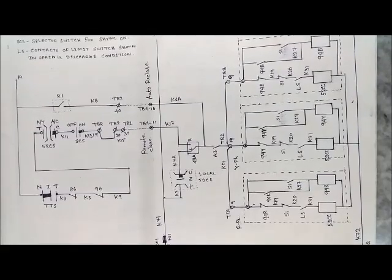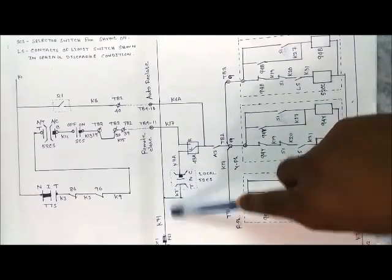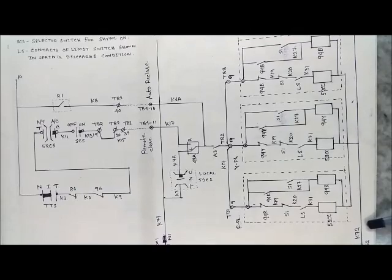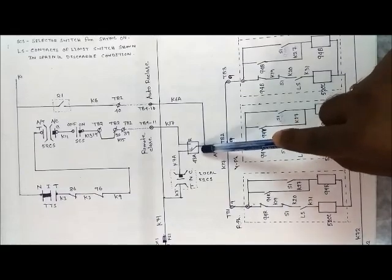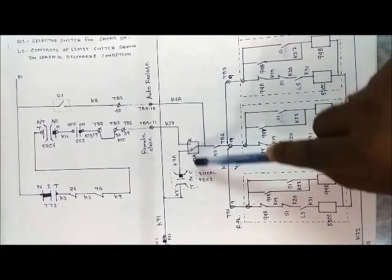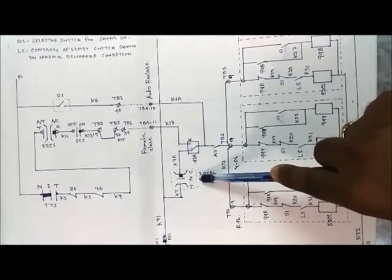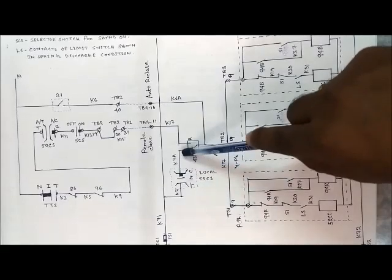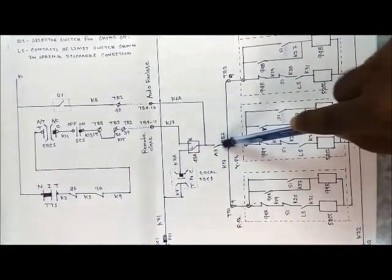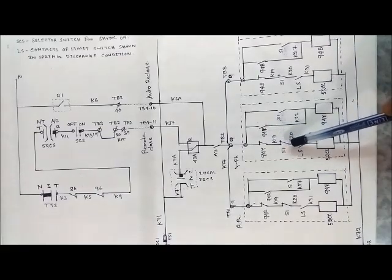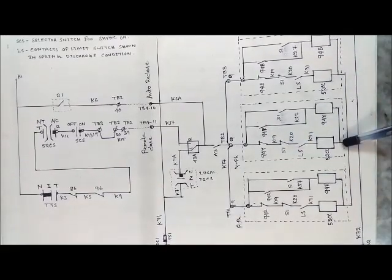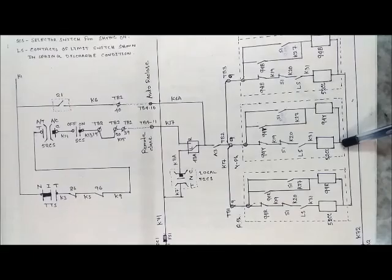K71 is the positive DC and K72 is the negative DC, taken from TC1 positive and TC1 negative, as will be shown in the next diagram. For local closing operation, the local/remote selector switch must be in the local position. When we give a closing pulse from the local control switch, the positive DC comes through the local control switch to the local/remote selector switch, to the common terminal, and from there via the 94Y closing contact, auxiliary contact, and limit switch contact to the closing coil.